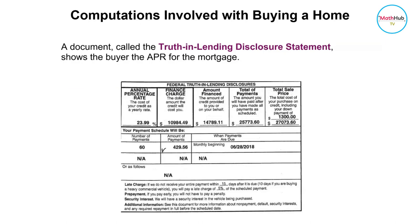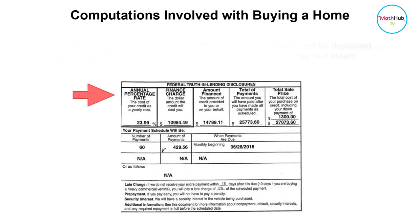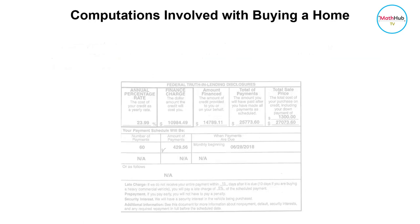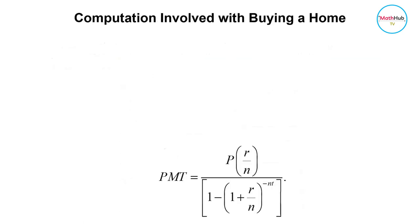A document called the Truth in Lending Disclosure Statement shows the buyer the APR for the mortgage. In addition, lending institutions can require that part of the monthly payment be deposited into an escrow account — an account used by the lender to pay real estate taxes and insurance.